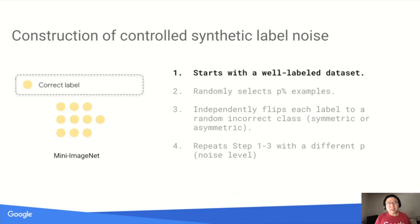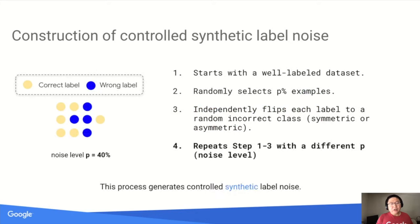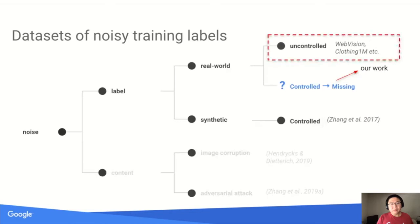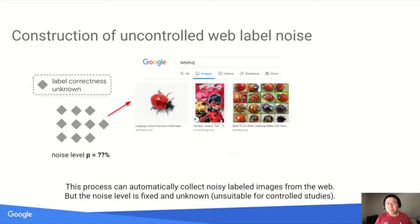To understand how we do this, let's first look at how controlled synthetic label noise is constructed. People usually start with a well-labeled dataset such as MiniImageNet, then randomly select p% of examples and independently flip each label to a random incorrect class. Depending on how we flip the label, we can get symmetric or asymmetric noise. Repeating this process with different values of p gives a series of datasets. For uncontrolled real-world noise, existing work collects images from the web by querying an image search engine using the class name as a keyword. Since we do not know the correct image label, the noise level is not only fixed but also unknown — that's why existing web noise is uncontrolled.